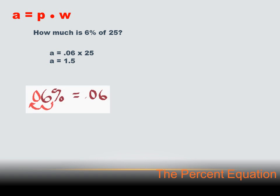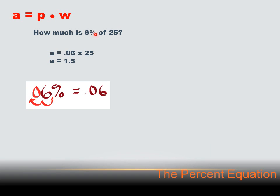You notice I changed 6% to .06. I think most of you remember how to do that, but for a quick review: 6 percent — if I want to change it to a decimal, I move the decimal place two to the left. That leaves a blank space there, so I need to put a zero there. So 6% equals .06.